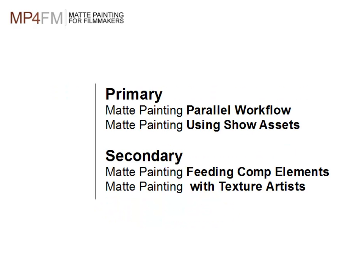I would separate these four variations into different categories: a primary and a secondary use for matte painting. The primary use is the matte painting parallel workflow and matte painting using show assets — where matte painters are content creating and content finishing, thus using matte painting to its full extent. The secondary use — feeding comp elements and matte painting with texture artists — is set up to be a support to the other departments.